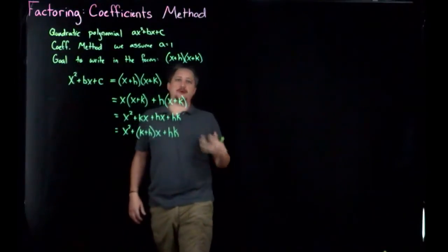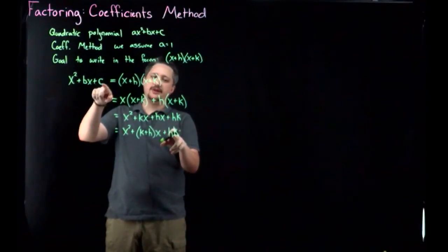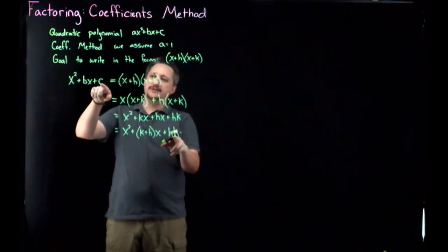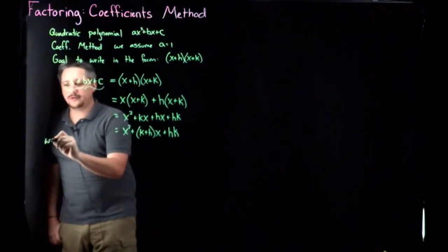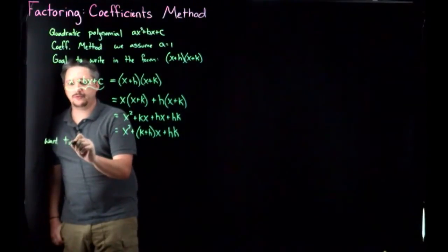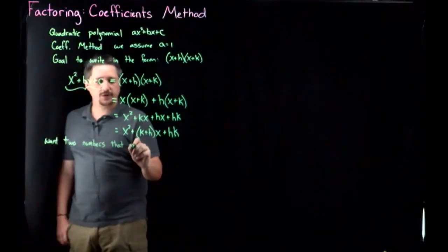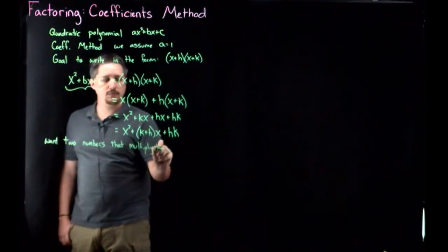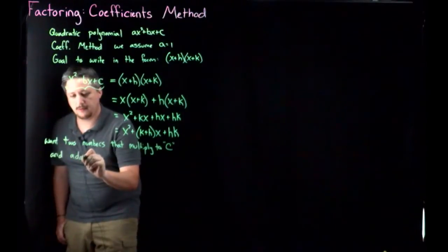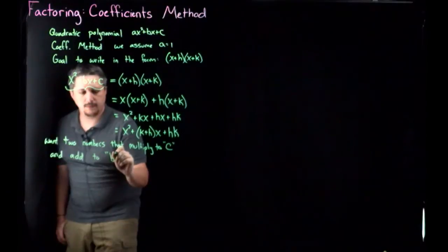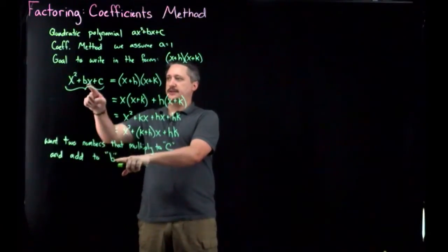So this motivates the observation that is probably the part that most of you remember, which is that we want two numbers that multiply to the constant, right, because these things should be the same. These are the constants. So I want an h and a k that multiply to c but add to b. So looking at this form then, again, we want two numbers that multiply to c and add to b. Because they should multiply to get c, they should add to get b.